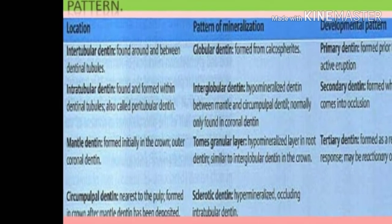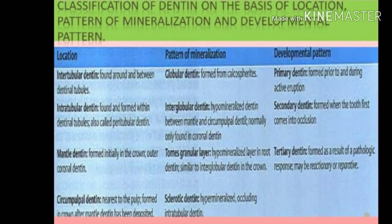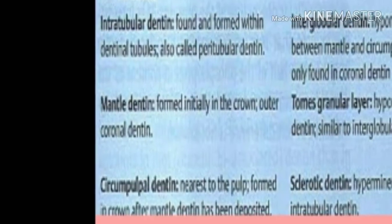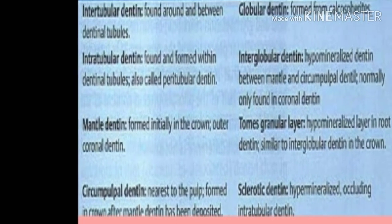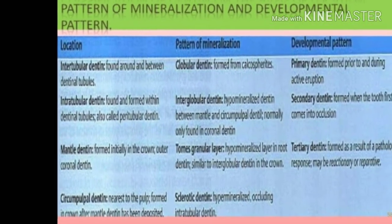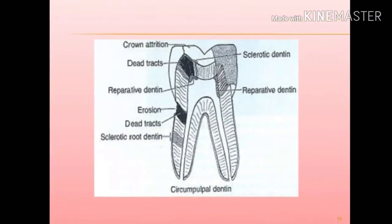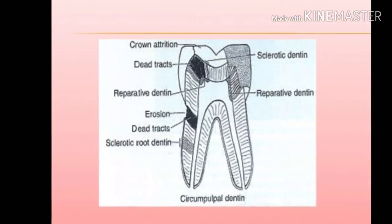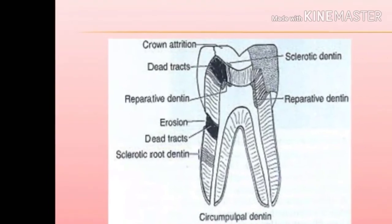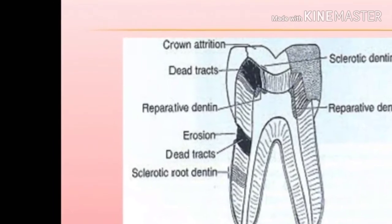On the basis of developmental pattern, dentine is divided into primary dentine, secondary dentine, and tertiary dentine. Primary dentine is formed prior to and during active eruption. Secondary dentine is formed when the tooth first comes into occlusion. Tertiary dentine is formed as a result of a pathologic response and may be reactionary or reparative. The figure shows types of dentine including sclerotic dentine, reparative dentine, circumpulpal dentine, sclerotic root dentine, reparative dentine, dead tracts, and crown attrition.